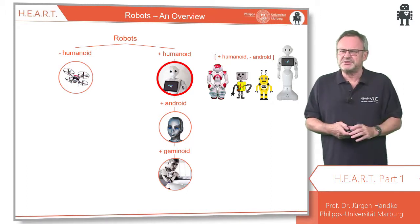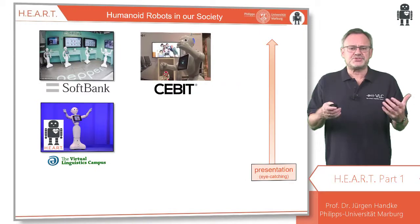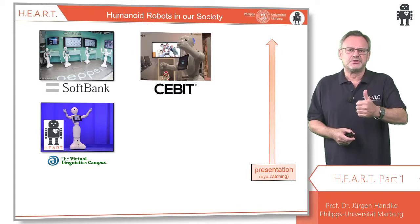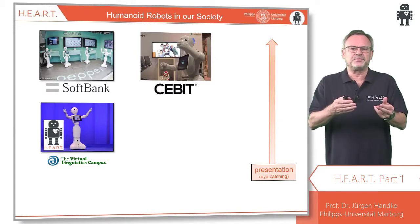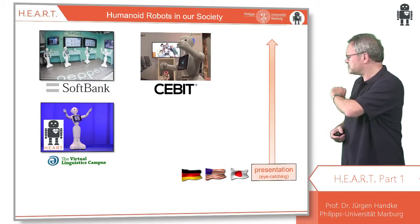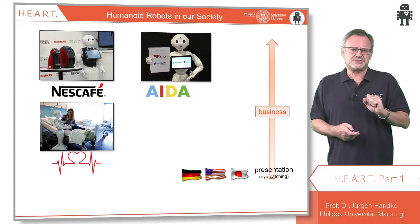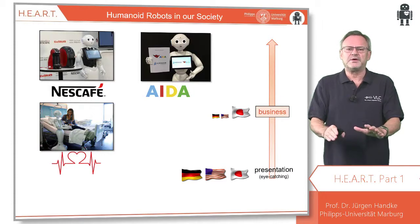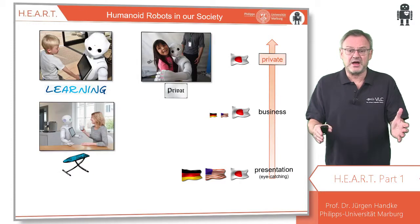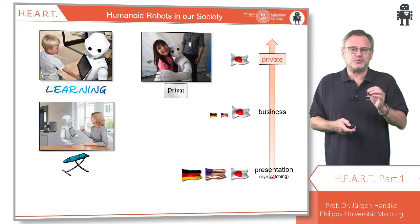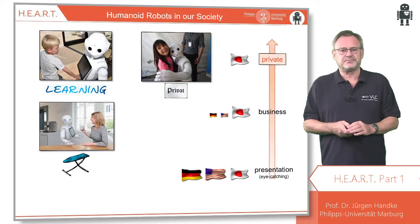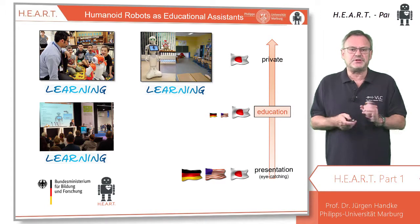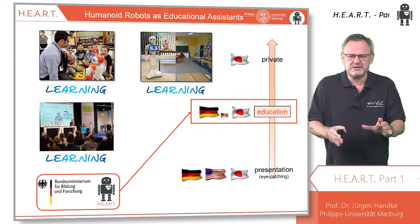But will it be accepted? In a modern society, humanoid robots are already used in public as eye-catchers — to draw attention, to advertise, and so on — in many industrial nations. But in business situations, their degree of acceptance varies: high in Japan, but low elsewhere. And in private life, Japan seems to have accepted humanoid robots more than any other country. The goal of HEART is to find out whether humanoid robots could also be used in education — and not only in Japan, but in Germany too.